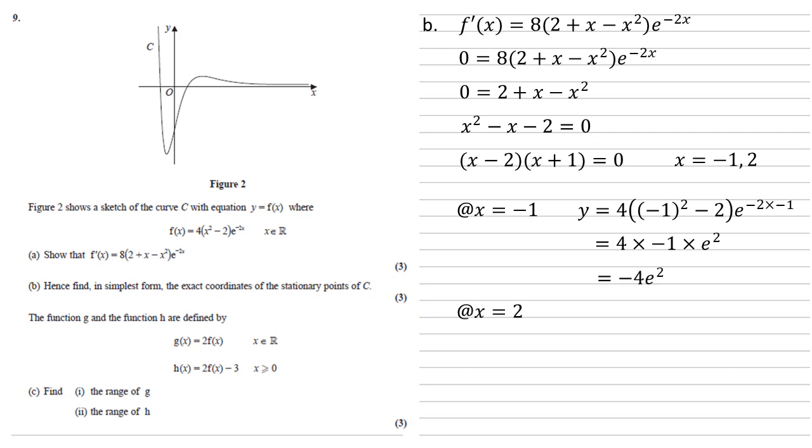When x equals 2, again putting this into f of x, y is going to equal 4 lots of 2 squared minus 2, times e to the minus 2 times 2. So the bracket 2 squared minus 2 is 2, so we get 4 times 2 times e to the minus 4, which equals 8e to the minus 4.